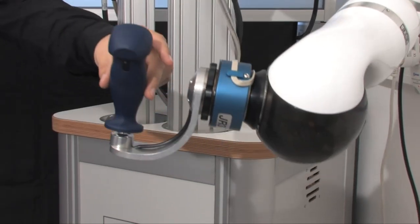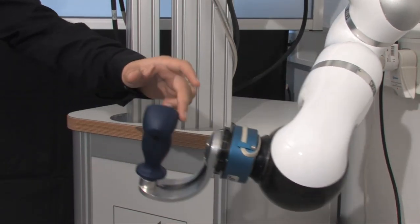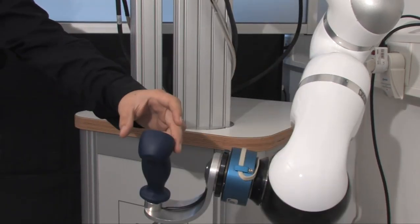A force torque sensor measures the forces and torques applied by the user. These signals are used to scale down the robot inertia to approximately 30%.